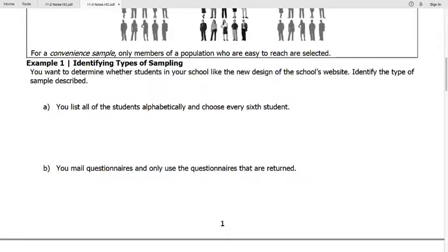All right, so let's take a look at this first example. We just want to identify what type of sampling is being used in each of these scenarios. So example A, we list all students alphabetically and we choose every six students. So we've got a rule for how we're going to pick the students. We call this then systematic sampling.